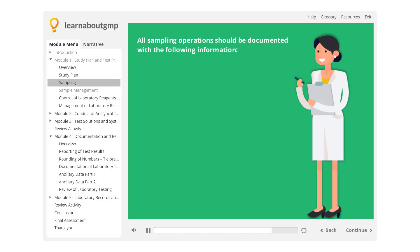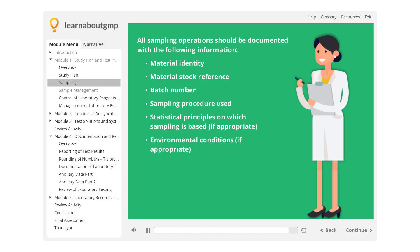Material identity, material stock reference, batch number, sampling procedure used, statistical principles on which sampling is based if appropriate, environmental conditions if appropriate, identification of sampling locations if appropriate, and identity of the persons performing the sampling.